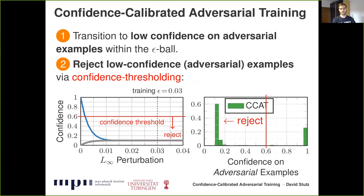On SVHN, for example, we chose a confidence threshold of 0.6, and we are clearly able to reject the majority of adversarial examples, as shown in the confidence histogram on the right.